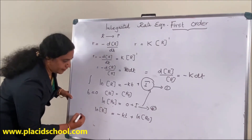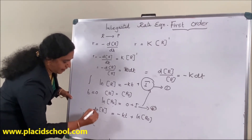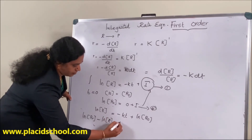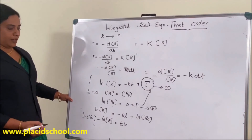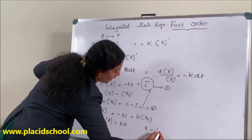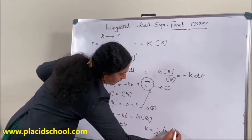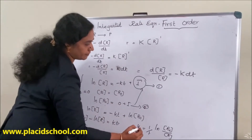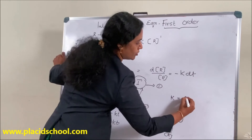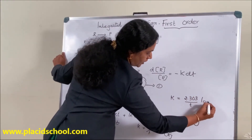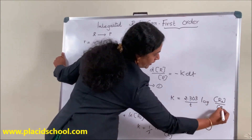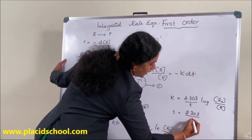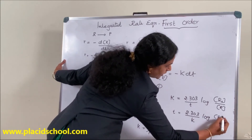Rearranging this equation: ln R₀ minus ln R equals Kt, which gives K equal to 1 by t times ln R₀ by R. Applying the logarithm conversion: K equals 2.303 divided by t, times log of initial concentration divided by final concentration. Or equivalently, t equals 2.303 divided by K, times log R₀ by R.